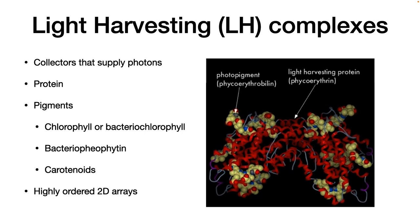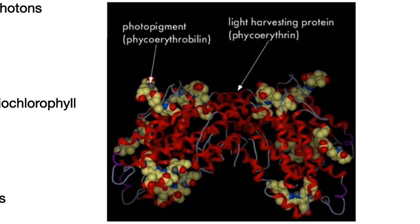You can think of them as giant antennae with a large surface area from which to collect light. Light-harvesting complexes are made of protein and have pigments attached to them. These pigments include chlorophyll, bacteriochlorophyll, bacteriophyton, and carotenoids. Light-harvesting complexes are highly ordered 2D arrays that hold the pigments in the perfect orientation for maximum photon collection. Shown here is the crystal structure of phycoerythrin, a light-harvesting protein.